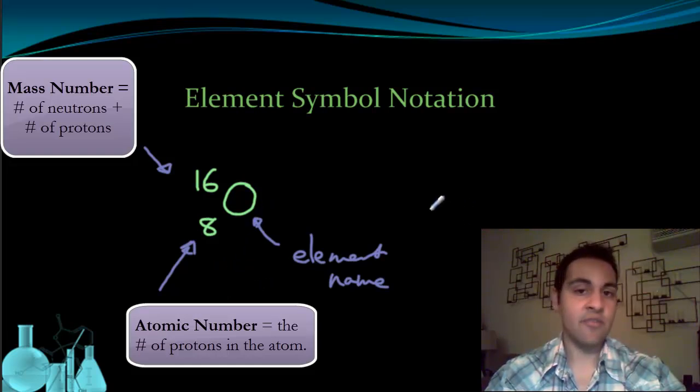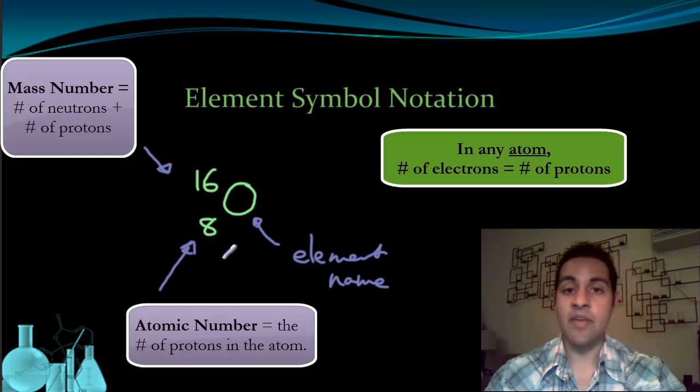The last thing we're going to mention is that for all atoms, the number of electrons, the negative charges, has to equal the number of protons, the positive charges. That way it's overall neutral. You have a balance of positive and negative. So the number of electrons equals the number of protons.